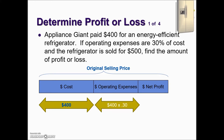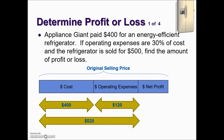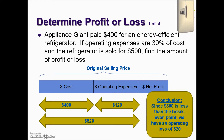Operating expenses are 30% of cost, so we take 400 times 30%, which is $120. Adding cost plus operating expenses together gives us the break-even point of $520. The refrigerator was sold for $500, which falls below the break-even point, so we have an operating loss. Taking the $520 break-even point and subtracting the sale price gives us an operating loss of $20.